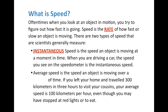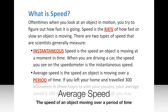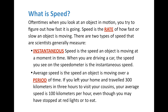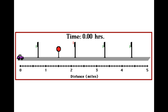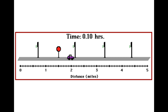Generally when we talk about how fast we're going somewhere, we talk about average speed — the speed of an object moving over a period of time. If you left your home and traveled 300 kilometers in three hours to visit your cousins, your average speed is 100 kilometers per hour for the entire trip, even though you may have stopped at red lights or to eat. The time elapsed keeps moving even when the car is stopped. In 0.20 hours, if it travels 5 miles, then 5 miles divided by 0.2 hours gives you 25 miles per hour, or about 40 kilometers per hour.